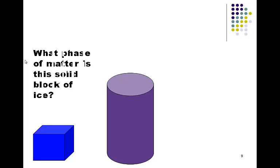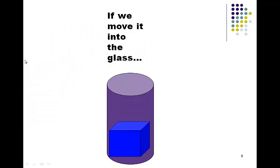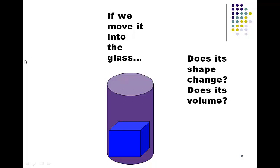So, what phase of matter is the solid block of ice? If you said solid, you'd be right. Well, right now this ice, this solid ice, is outside of the glass. If we move it inside the glass, did the shape of the ice cube change? Did the volume? Neither, because both shape and volume are constant.